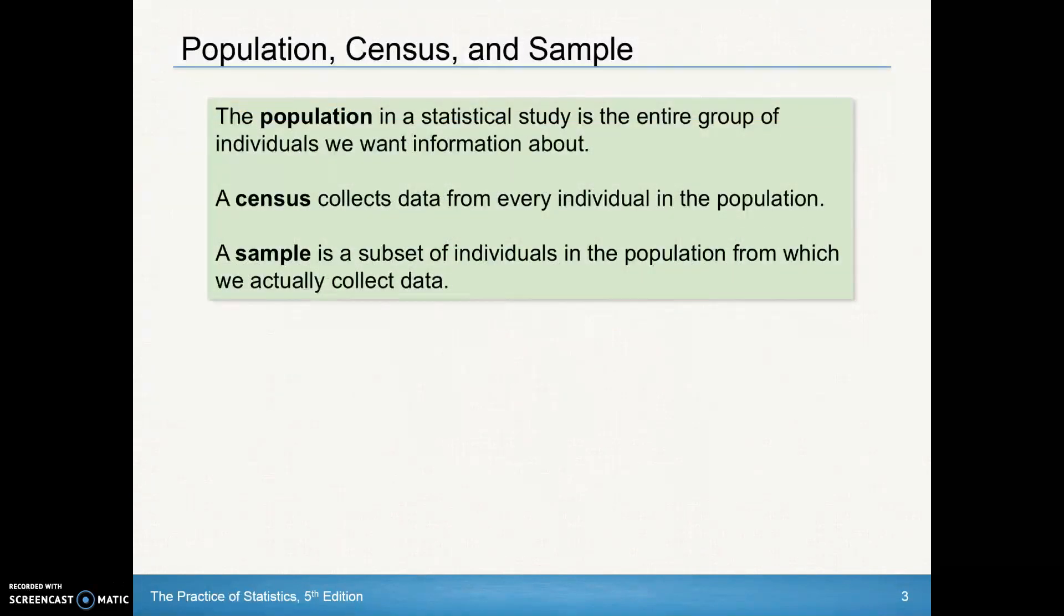All right we've got to define some vocabulary words. The three words we're going to look at are population, census, and sample. The population in a statistical study is the entire group of individuals that we want to find information about. A census will collect data from every individual in the population.